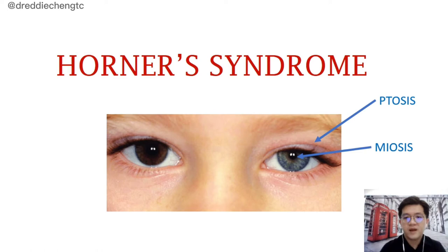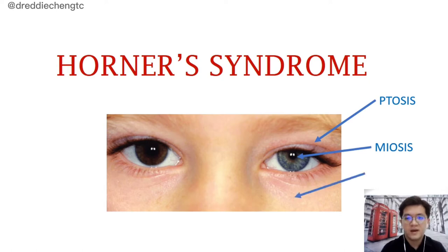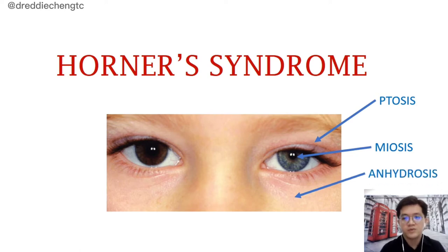This gives rise to anisocoria, in which both eye pupils are of different sizes. And then we have a reduced or absent sweating over the ipsilateral face, which we call anhydrosis.